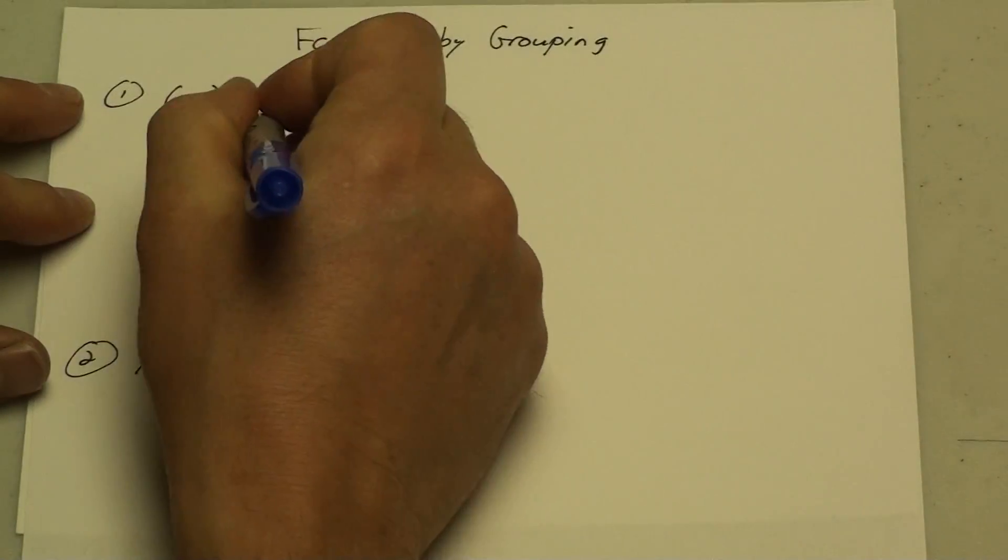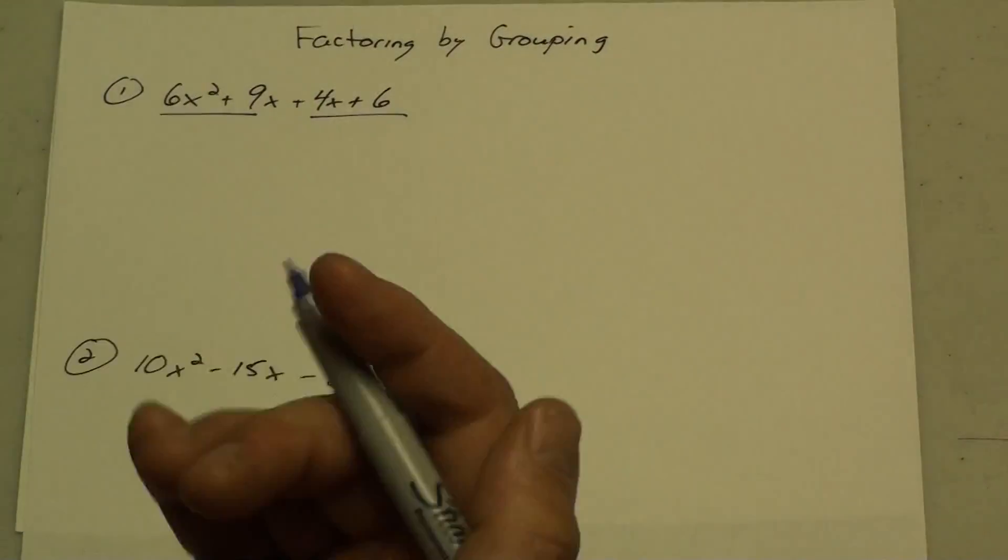You're going to have to split in half. You're going to take the first two, first half, and then the second half, and you're going to factor from each of the halves.